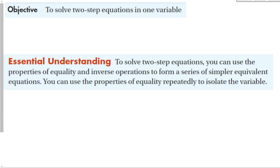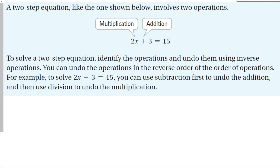You can use the properties of equality repeatedly to isolate the variable. Instead of one operation to get the variable by itself, we're going to have two — that's what makes them two-step equations. In the next section we'll have more. A two-step equation like the one shown below involves two operations: multiplication and addition.